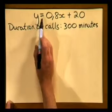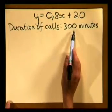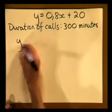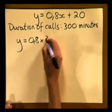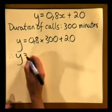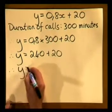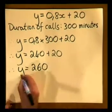For example, to work out the total cost for 300 minutes of calls in a month, we substitute into the formula y = 0,8x + 20. So y = 0,8 × 300 + 20, therefore y = 240 + 20, therefore y = 260 rand. That was really simple.